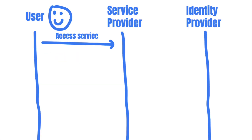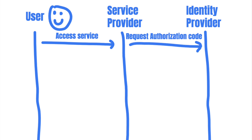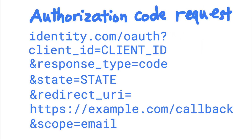The first request in this whole process is that the service provider will send the request for an authorization code. This request will include the service provider's client ID, a redirect URI, a scope list, and a state, which is essentially a CSRF token.